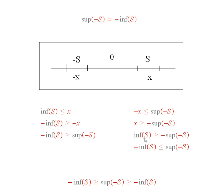So, that means that the greatest lower bound of S is bigger than or equal to this particular lower bound. And now, if I multiply by negative 1 on both sides, that gives me this inequality here.